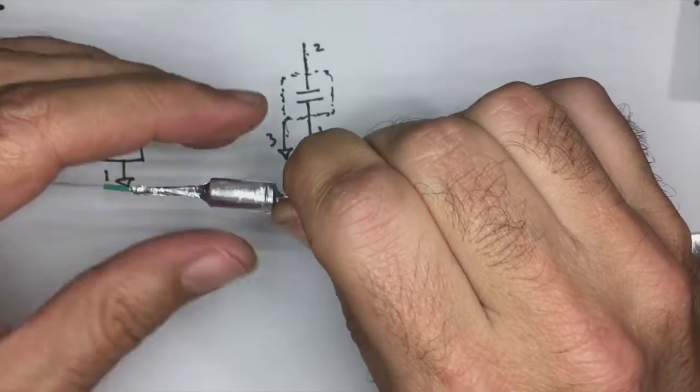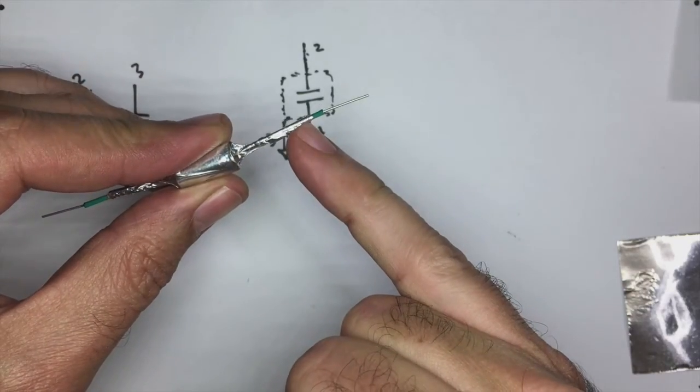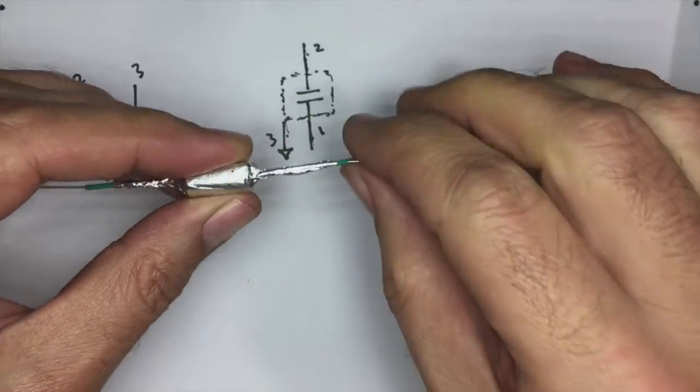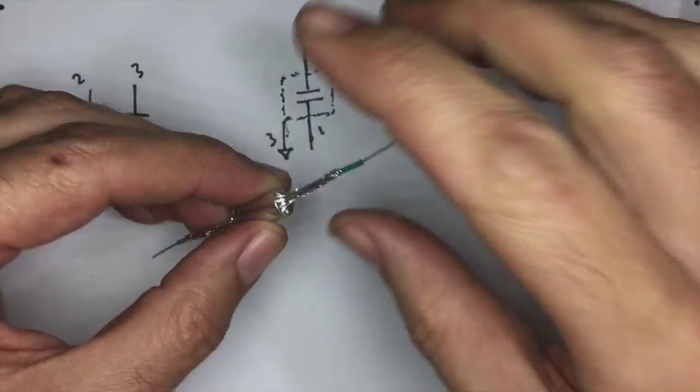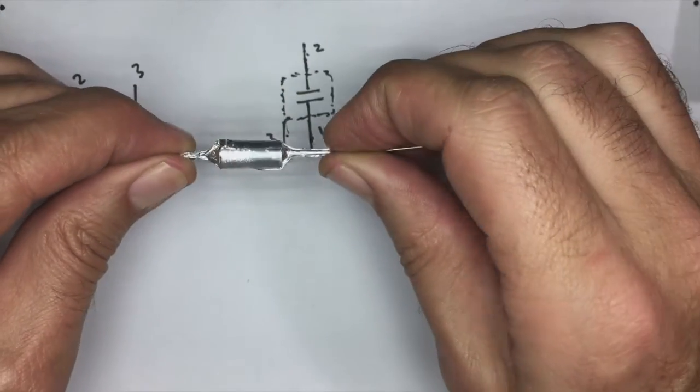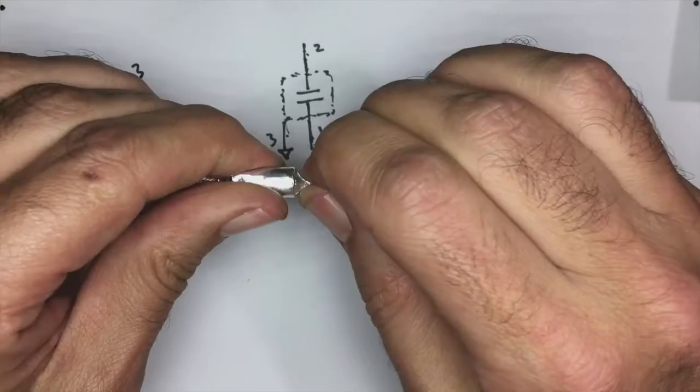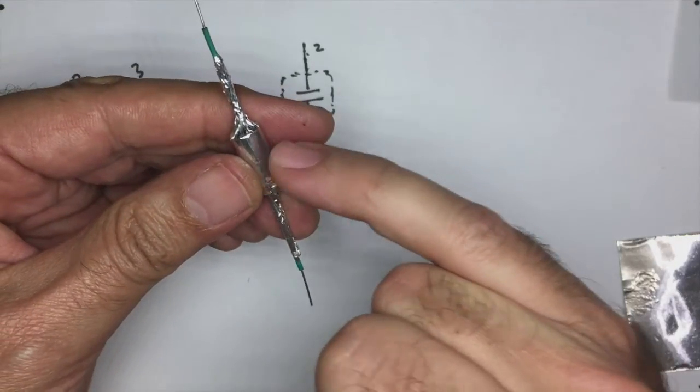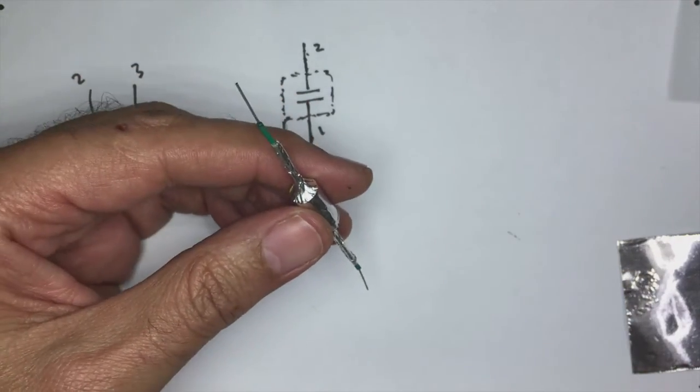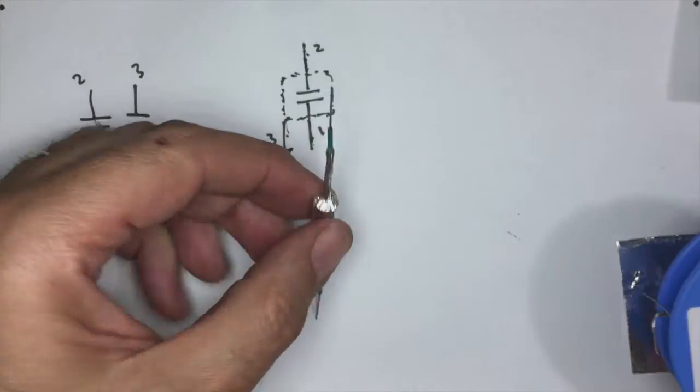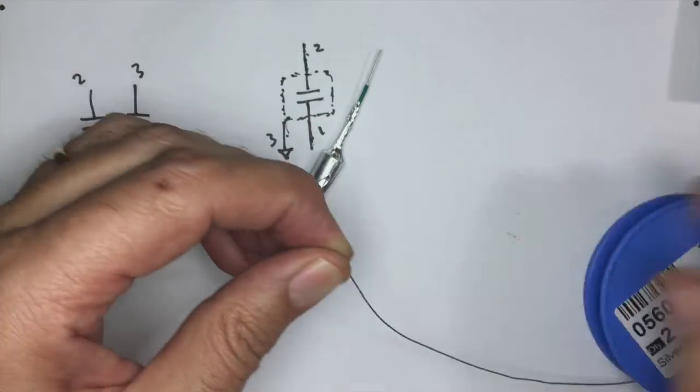Now you have to make very sure that that shield does not touch the lead, and that one does not touch that lead. Now what do we do? We need to get contact to this tape. And the way to do that, just get some, this is a 0.6 millimeter silver wire, they call it.